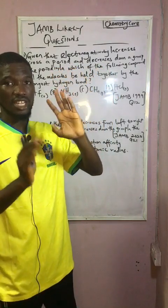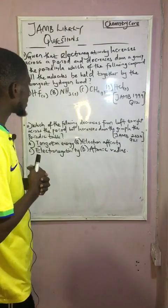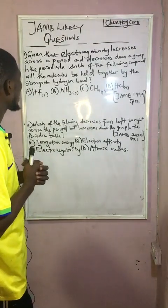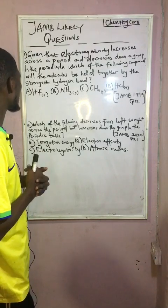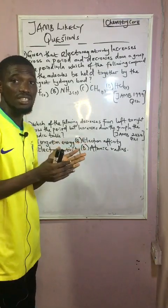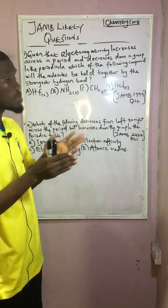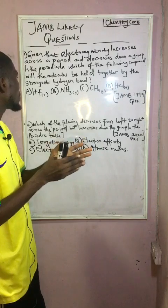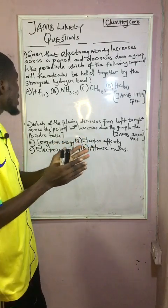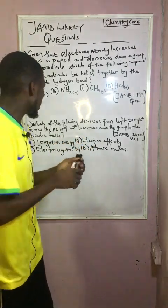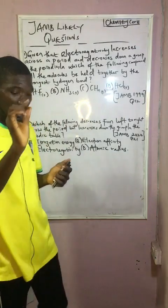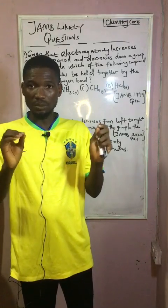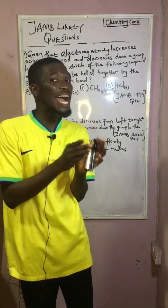JAM 1999 question: Given that electronegativity increases across a period and decreases down a group in the periodic table, in which of the following compounds will the molecules be held together by the strongest hydrogen bond? When we talk about hydrogen bonding, you need to understand the concept of hydrogen bonding.